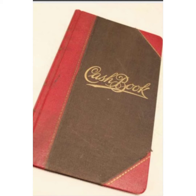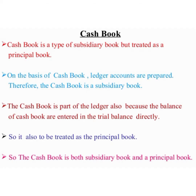Now we are going to learn about the term cash book. It is quite impracticable and inconvenient to record all the cash transactions in the journal. Therefore, all cash transactions may be separately recorded in a specially prepared book — that is the cash book. Cash here means notes, coins, checks, bank drafts, and postal orders. All transactions in these forms are recorded in the cash book.